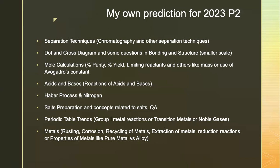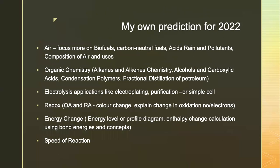So I think they will test a bit more on metals this year — whatever it is for the last time, this year's batch will be tested a bit more. Pure metal versus alloy, and some reactions involving metals. Not much on metal reactions in last year's paper, so maybe this year they'll discuss reducing agents like hydrogen and carbon reacting with metal oxides. Also, focus more on biofuel, carbon neutral, acid rain, pollutants, and the composition of air and its uses.